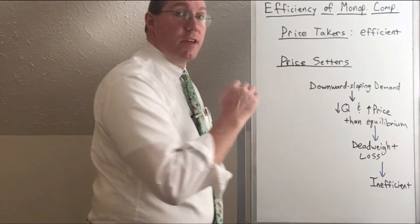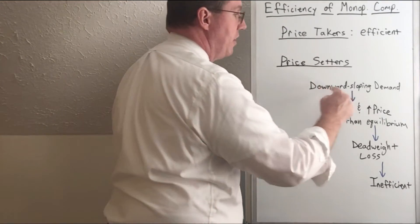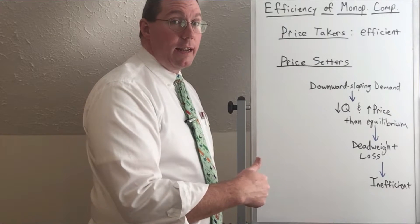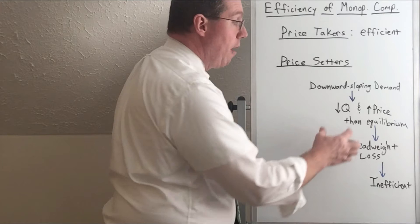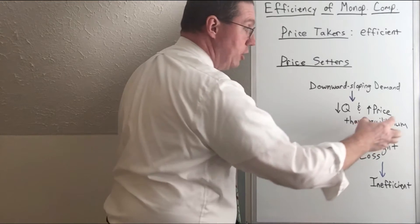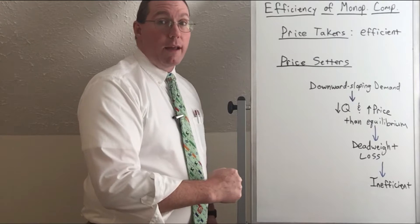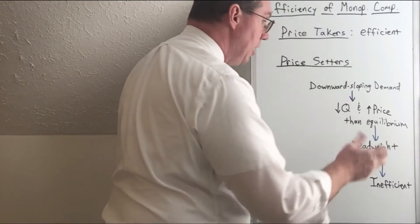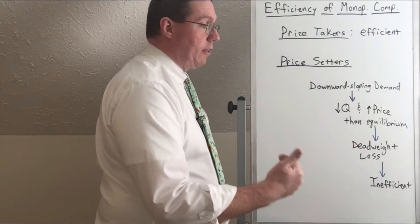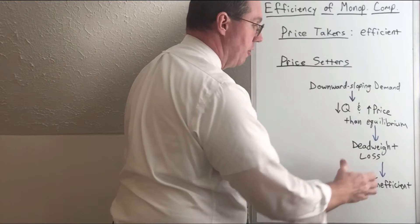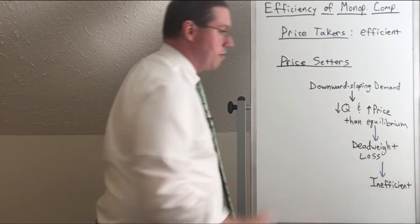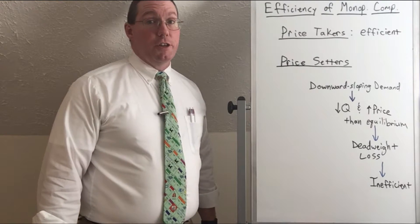Why are price setters economically inefficient? It's because price setters have a downward sloping demand curve, and when you have a downward sloping demand curve and you are able to set your own price, you're going to set it according to the profit maximizing quantity. The profit maximizing quantity usually winds up being lower than equilibrium quantity, which usually results in a price higher than equilibrium price. Because the price is not equilibrium, it results in a dead weight loss, and dead weight loss is our metric — our determiner of whether a market is economically efficient. So price setters generally result in economic inefficiency in the market.